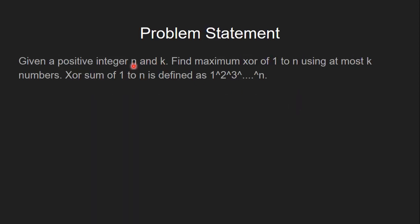The problem statement is: given a positive integer n and k, find maximum XOR of 1 to n using at most k numbers. XOR sum of 1 to n is defined as XOR of all the numbers from 1 to n.